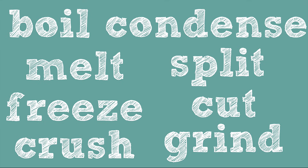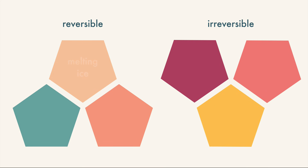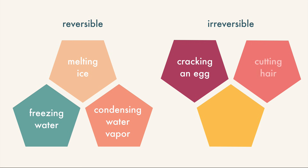Also, some of these changes are reversible and some are irreversible. Melting ice, freezing water, and condensing water vapor are examples of reversible physical change — you can change them back by changing the temperature. Cracking an egg, cutting your hair, and sharpening a pencil are irreversible. You can't uncut your hair. If that were possible, that would actually be seriously cool, but kind of weird. And also, it's not possible — it's irreversible.